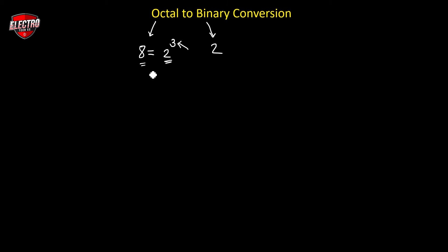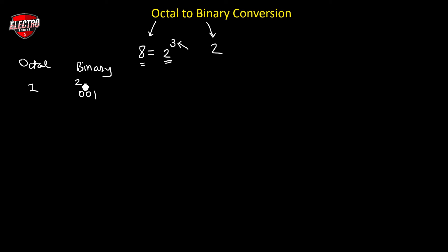Here 2 is the base of the binary number system and 3 indicates the number of bits we get by converting each octal digit into binary. So if we have octal digit 1, we get binary 001. The weighted values for the binary number system are: 2 raised to 2 equals 4, 2 raised to 1 equals 2, and 2 raised to 0 equals 1. From this we can represent octal 1. For octal digit 2, the equivalent binary number is 010, since 1 times 2 equals 2.